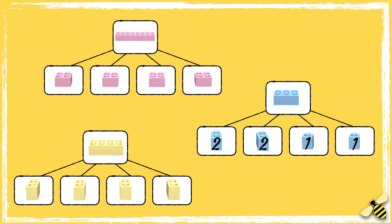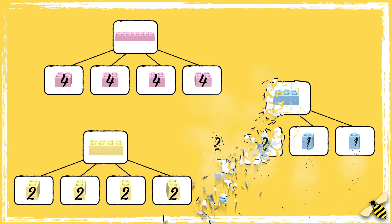Did you spot it? The blue shape has not been split into equal quarters, as two parts have two studs and two parts have one stud. The pink brick has been split into equal quarters, as there are four studs on each part. The yellow brick has been split into equal quarters, as there are two studs on each part. So the blue shape was the odd one out.